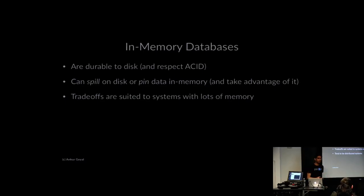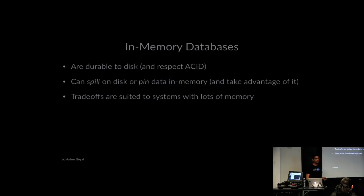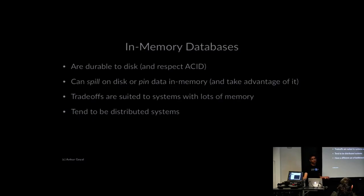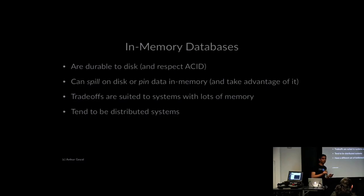In-memory databases tend to be distributed systems for two reasons: modern databases are distributed because of commodity hardware and the cloud, and memory is still pretty expensive, so you can string together memory across many machines very cost-effectively. It becomes exponentially more expensive to vertically scale a single machine. In-memory databases also tend to have different bottlenecks — that's where all the fun is. You're building the same storage, execution, and optimization components, but the bottlenecks are different, so you have to think about trade-offs differently.